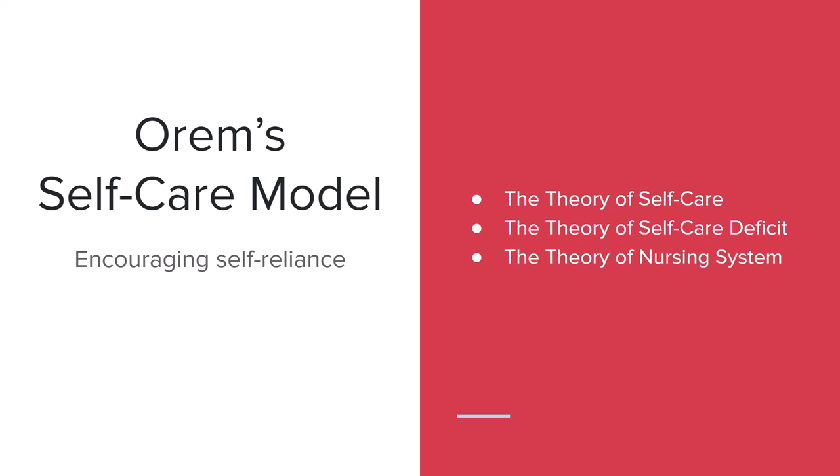Next up, we've got Orem's Self-Care Model, which is about encouraging self-reliance. There are three parts: the theory of self-care, the theory of self-care deficit, and the theory of the nursing system. The theory of self-care covers activities initiated by the person to maintain health, life, and general well-being. The ability to perform these activities is directly related to a person's ability to perform their ADLs — activities of daily living — which include the ability to take in food, water, and air, toileting, physical activity, socializing, and preventing injuries.